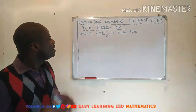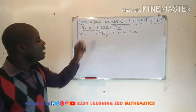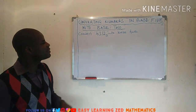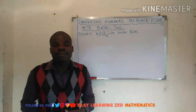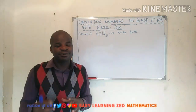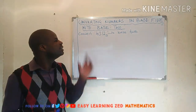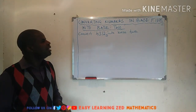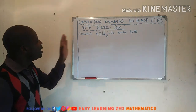Welcome to today's video. In this lesson we're going to look at converting numbers in base 5 into base 2. When you're converting numbers in base 5 into base 2, what you need to do first is convert the number given in base 5 into base 10, and then convert that answer into base 2. Keep watching as I'm going to show you how to do this.